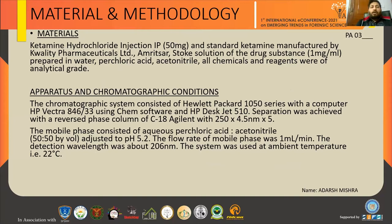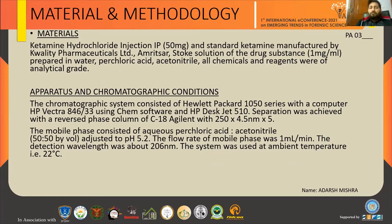In my study, I have analyzed ketamine using HPLC. The instrumental details include the Hewlett-Packard 1050 series, with a C18 column. The mobile phase consisted of aqueous perchlorate and acetonitrile in a 50:50 ratio by volume, with a pH of 5.2. The flow rate of the mobile phase was 1 milliliter per minute, and the detection wavelength was 206 nanometers.